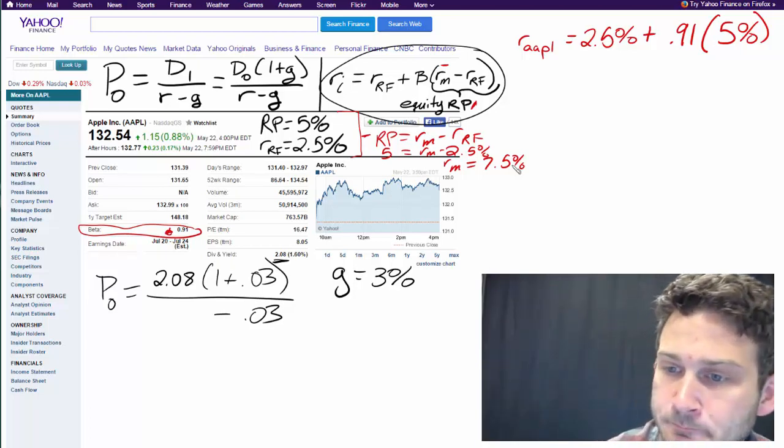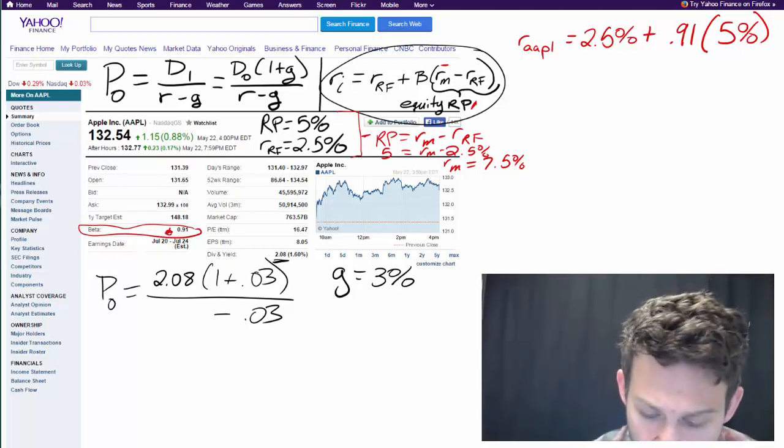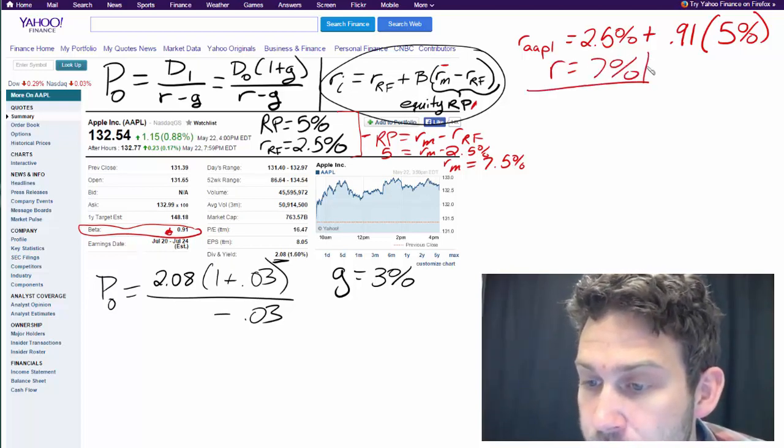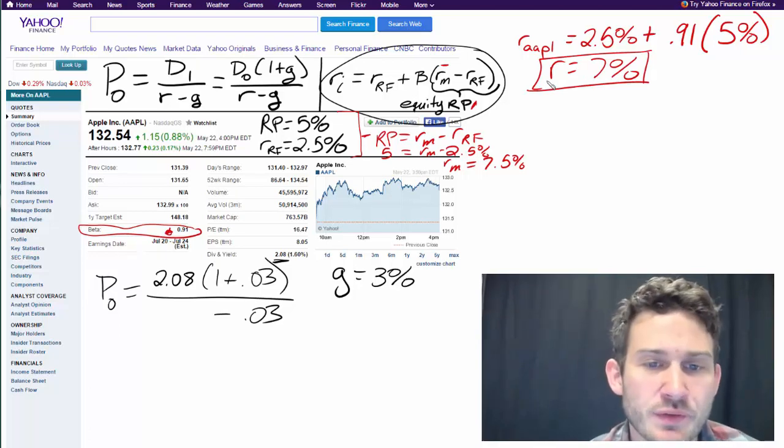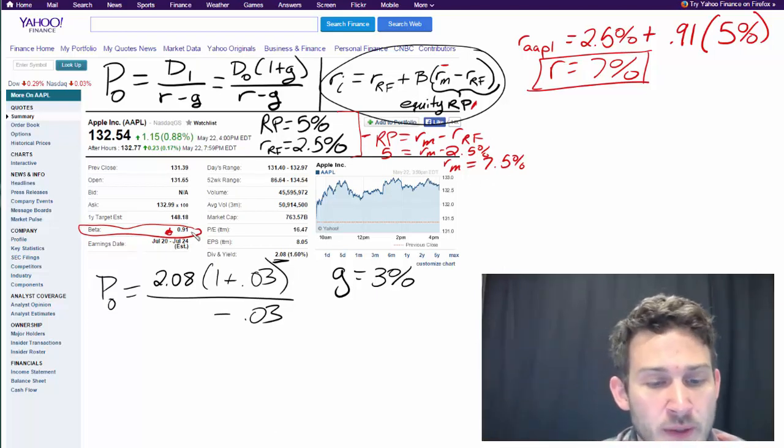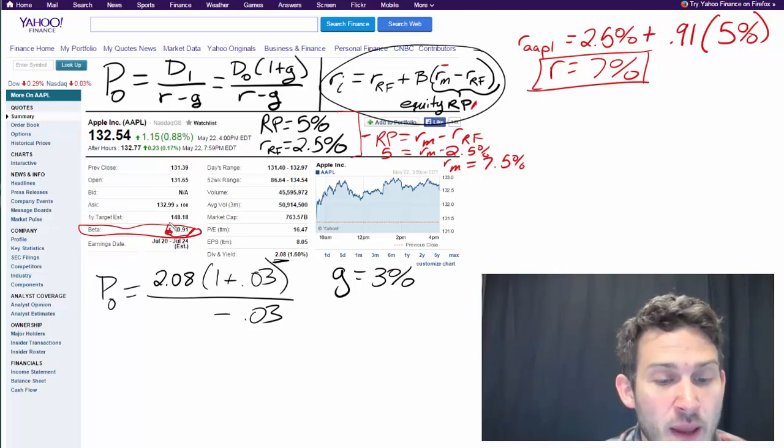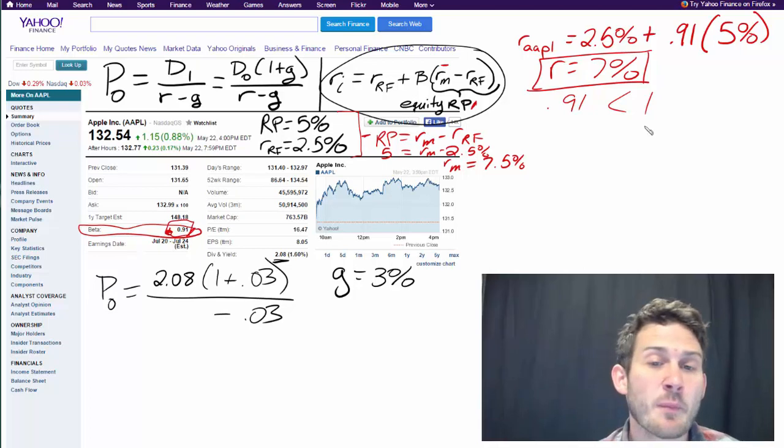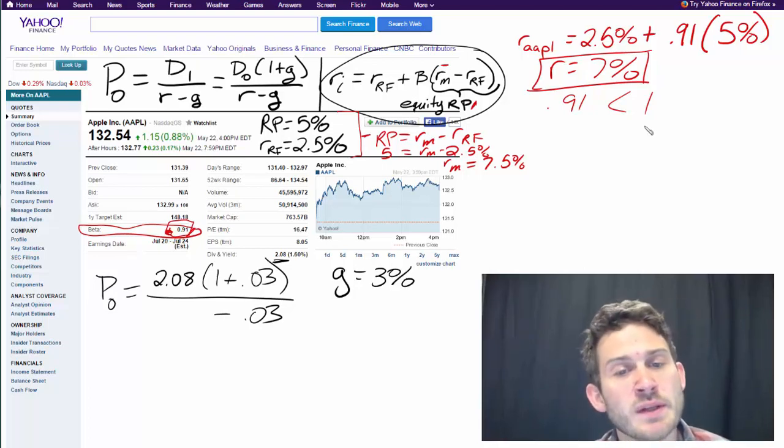Well, let's solve it and figure it out. We do the math here and we come up with a return of 7%. 7.05 would be exact, but we're just going to round it to 7%. Now we see that rate is lower than the market. We know before even doing the math it's going to be lower than the market because our beta is 0.91, and 0.91 is less than 1. If we have a beta of 1, that means this stock is going to mirror the market exactly.